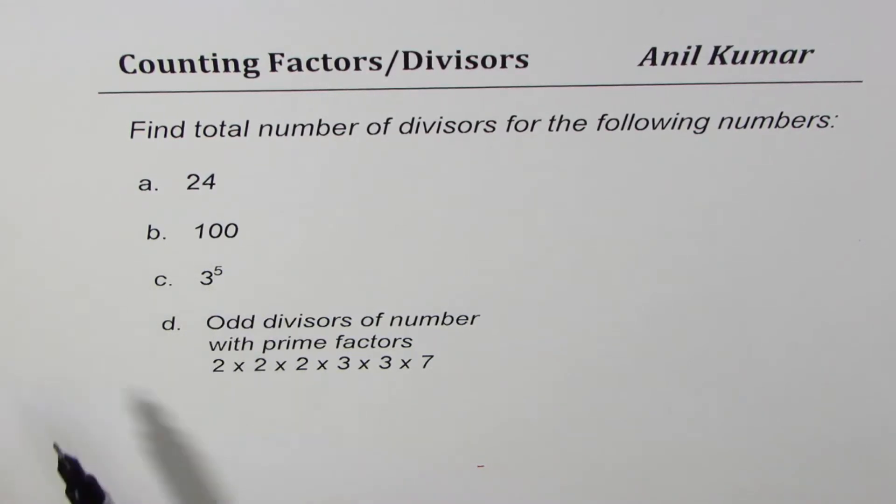100, 3 to the power of 5, or divisors of number with prime factors 2 times 2 times 2 times 3 times 3 times 7. You can always pause the video, answer the question, and then look into my suggestions.